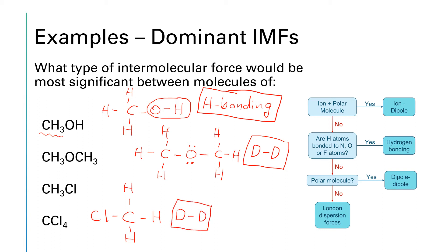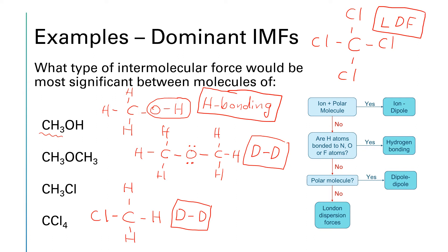Last is CCl₄ — a carbon with bonds to four chlorines. Do we have an ion plus a polar molecule? No. Are hydrogen atoms bonded to nitrogen, oxygen, or fluorine? No — there are no hydrogens. Is it a polar molecule? No — all four domains on the central carbon are identical, all single bonds to chlorine, so it is nonpolar. That means London dispersion forces are the only intermolecular force present, and by calculatus eliminatus, that is the dominant force.